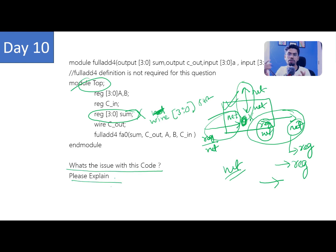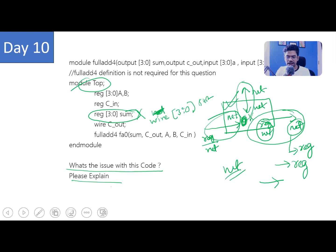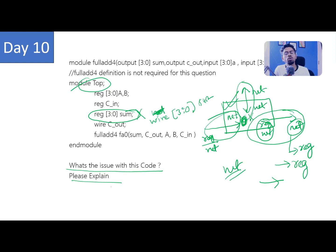So that's the problem — net type is always ready, reg type is not. You need to explain this in the comment section in your own words, as if explaining to an interviewer. For today we don't have a new coding question — this conceptual question is your task. Write your answer in the comments, and I'll see you tomorrow. Bye!